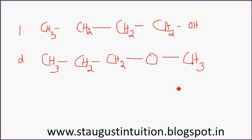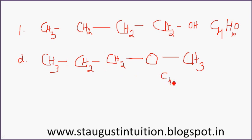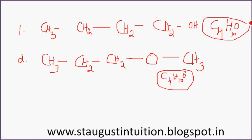Which type of isomerism is this? Isomerism means one chemical formula. Carbon and hydrogen are the same — carbon is 1, 2, 3, 4 and hydrogen is 3, 6, 7, 8, 9, 10. The chemical formula is the same — this is isomerism. There are 3 types of isomerism: chain isomerism, position isomerism, and functional group isomerism.